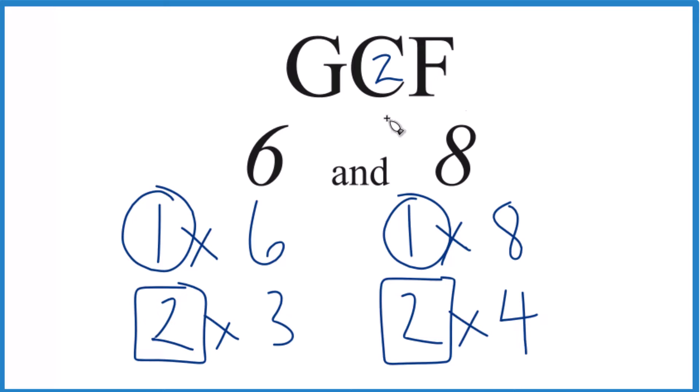There are other ways you could do this, like prime factorization, but for small numbers, this is usually pretty quick. It's Dr. B looking at the greatest common factor for 6 and 8. It is 2. Thanks for watchin'.